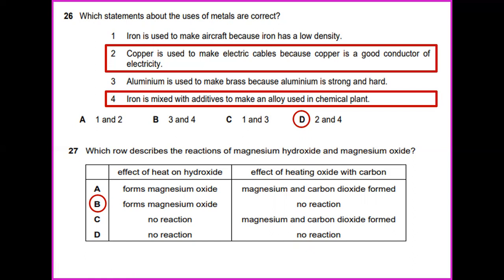Number 27. Which row describes the reaction of magnesium hydroxide and magnesium oxide? Effect of heat on hydroxide, it will be magnesium oxide. And when the effect of heating oxide with carbon, it doesn't show any reaction.